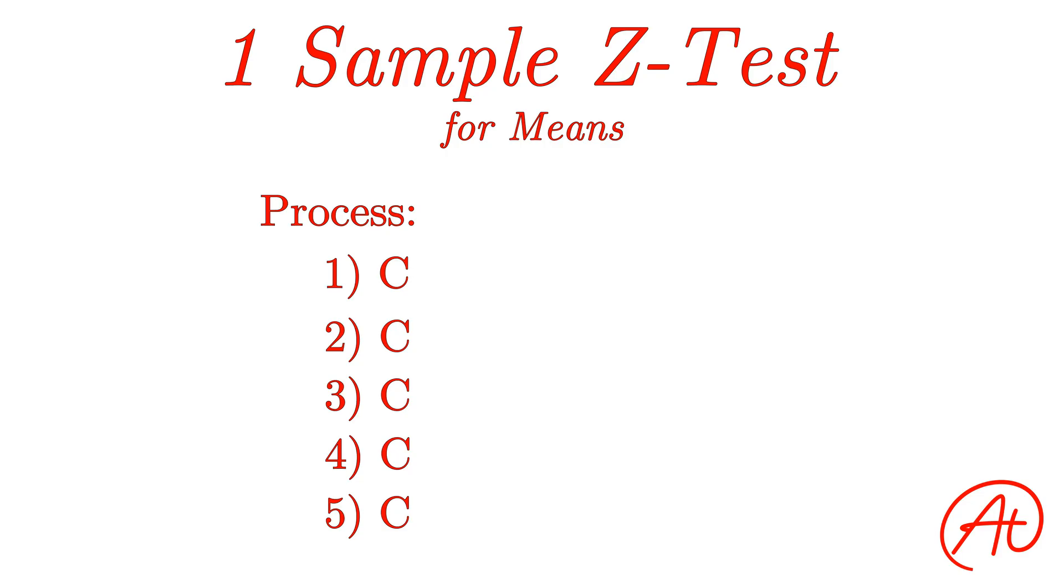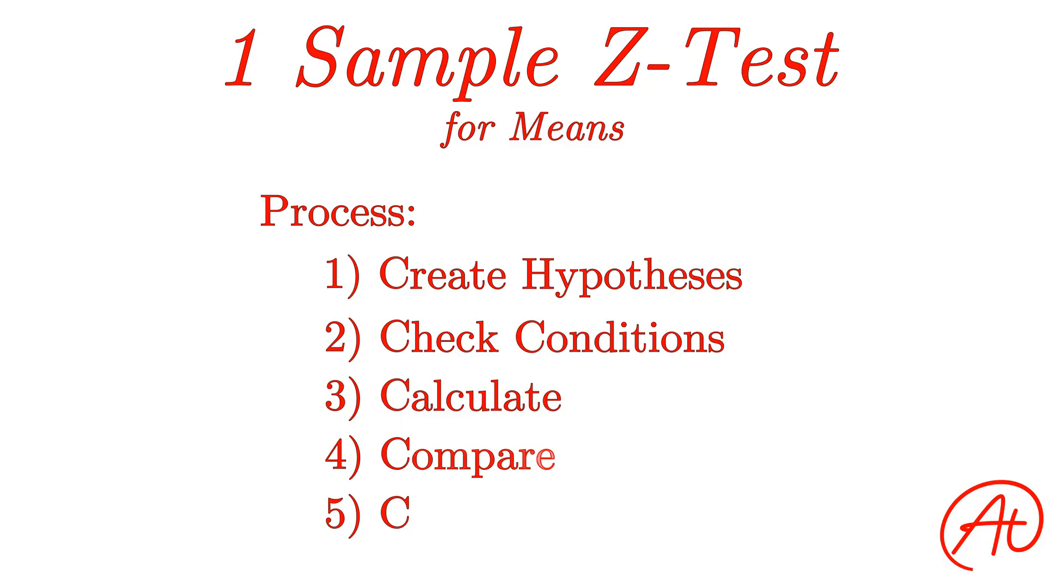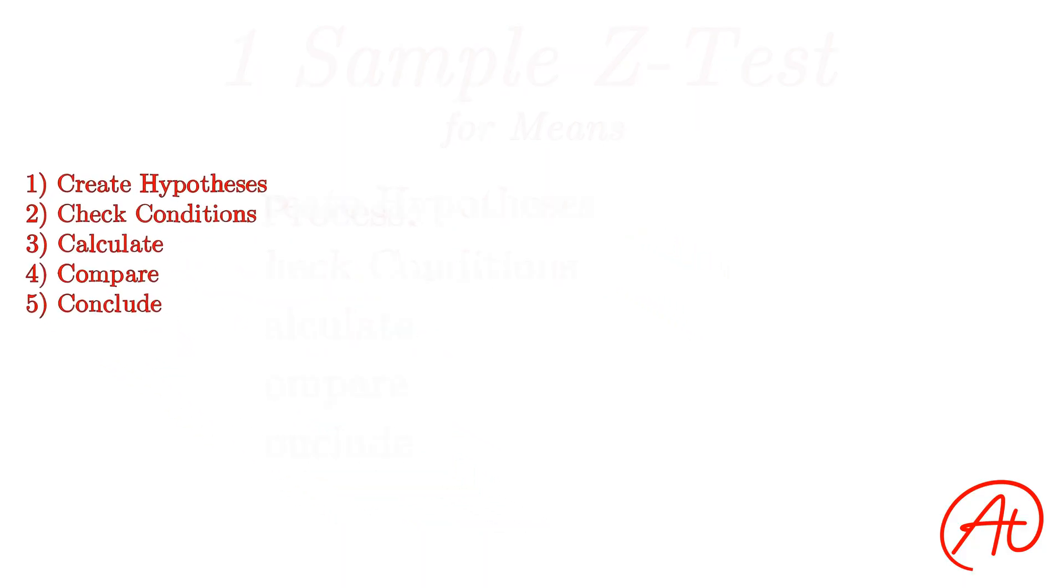We are going to first create our hypotheses for our particular problem, then we will check certain necessary conditions are true in order to use the one sample z-test method. Next we will calculate our test statistic and p-value, compare these to our critical value and alpha value, and finally conclude based on our findings. Alright, let's dive into each of these steps with our first example.